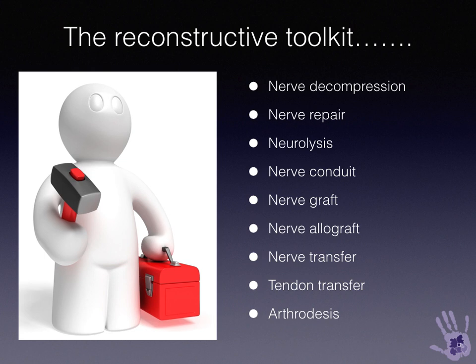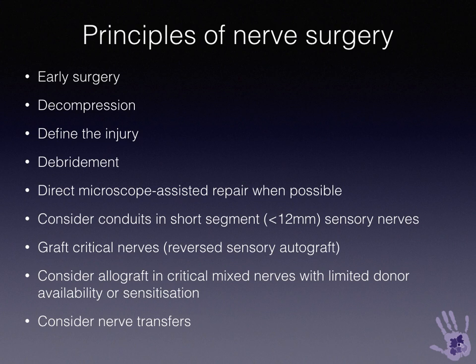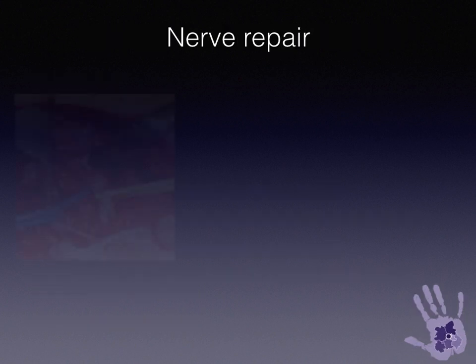There are a number of different strategies for reconstructing nerves: simple decompression, nerve repair, neurolysis of scar, use of conduits to bridge non-critical nerve gaps, nerve grafts, nerve allograft, nerve transfers, and late salvage with tendon transfer, arthrodesis, or free muscle transfers. The principles of surgery include early surgical assessment of the nerve, optimising the environment, defining the injury, decompressing the nerve, and undertaking tension-free direct microscopic-assisted repair when possible. I consider conduits in short segment defects of less than 12mm in sensory nerves; I graft critical nerves with reversed sensory autograft — usually the sural nerve or a cutaneous nerve from the upper limb; and I always consider nerve transfers as an adjunct to a nerve graft in a critical function following a segmental injury to a main nerve trunk.